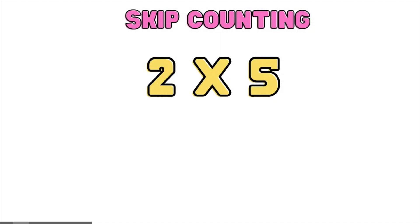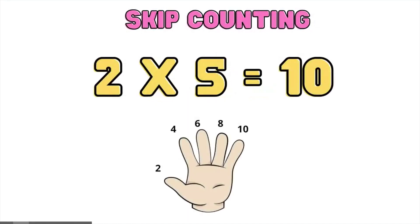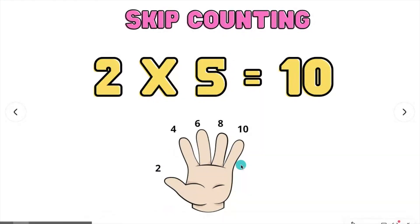Skip counting. 2 times 5 — go ahead and count by 2's. You may use your fingers: 2, 4, 6, 8, 10. 2 times 5 equals 10.